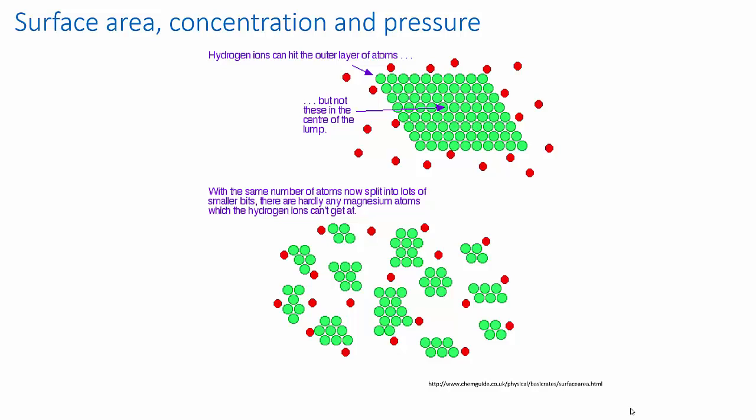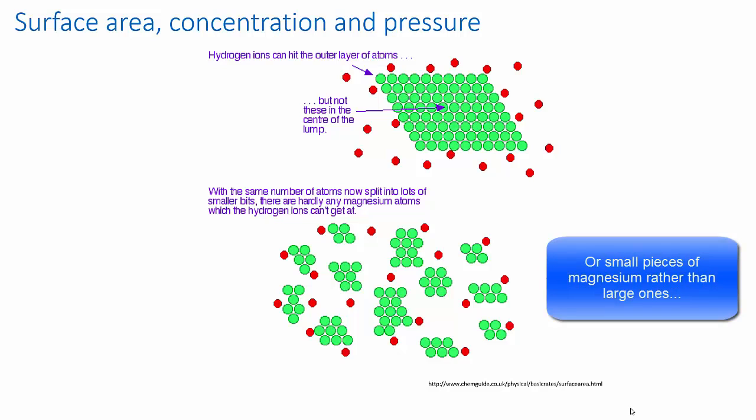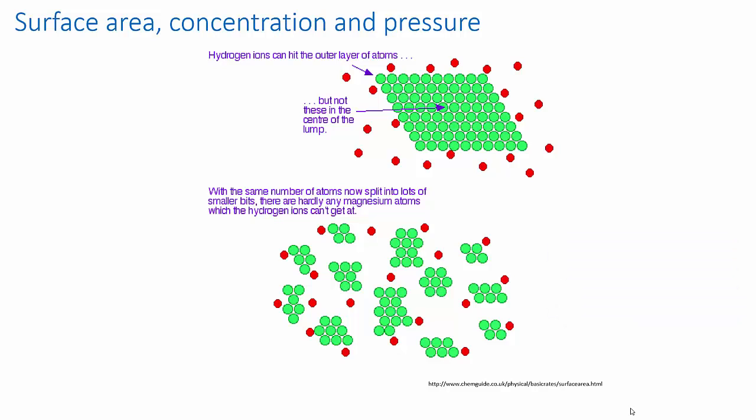But if you increase the surface area, and you could do this by dividing one of your phases more finely, for example, like having calcium carbonate powder in acid as opposed to a single large chunk of calcium carbonate in acid, if you do this, then you increase the frequency of the collisions because there's more surface area, there's more reactant molecules exposed, and hence you increase the reaction rate.